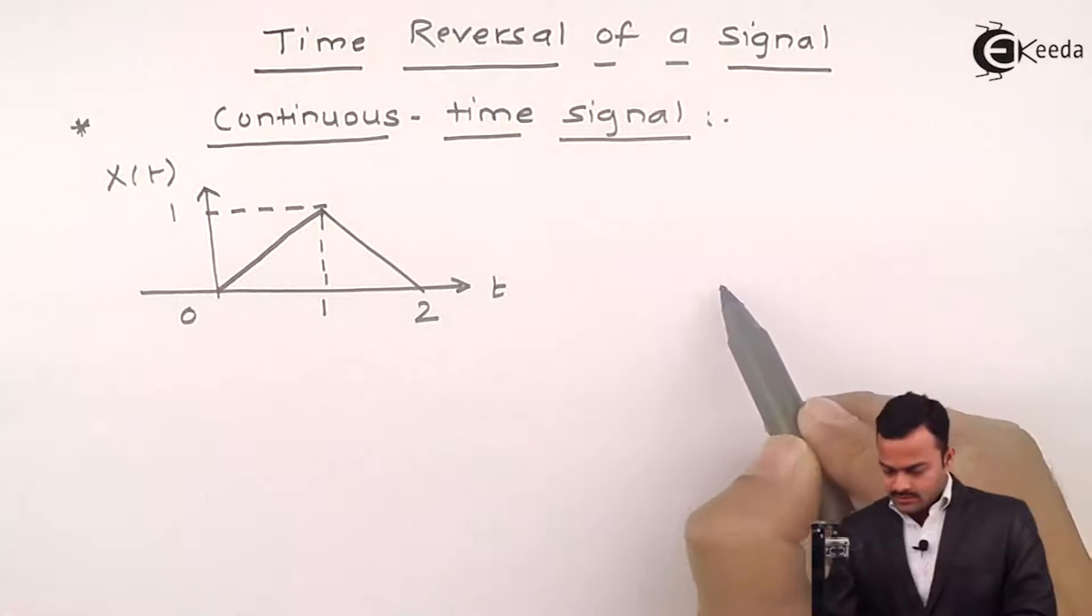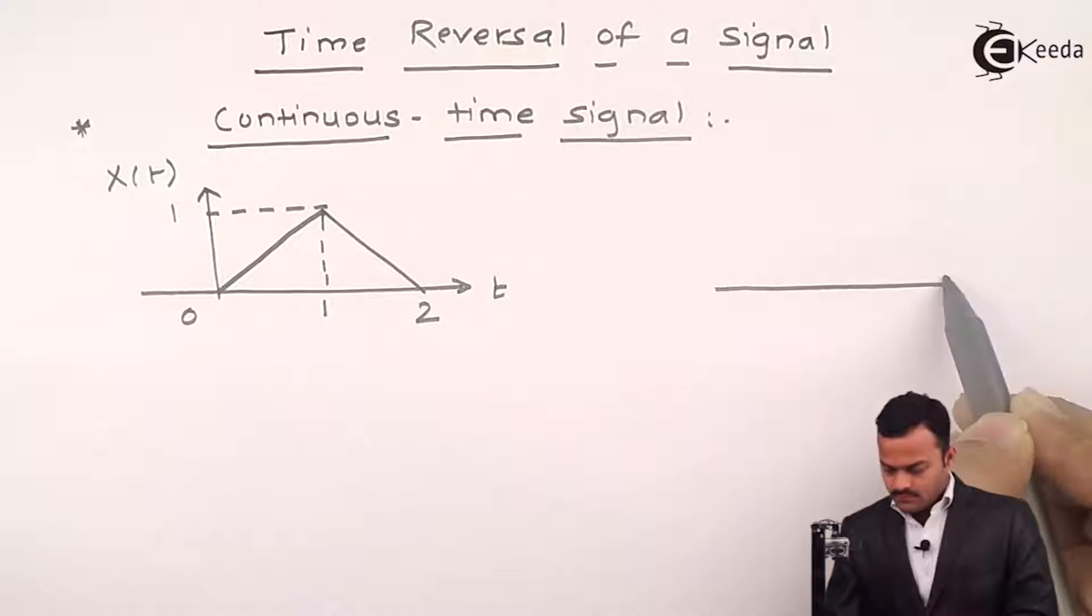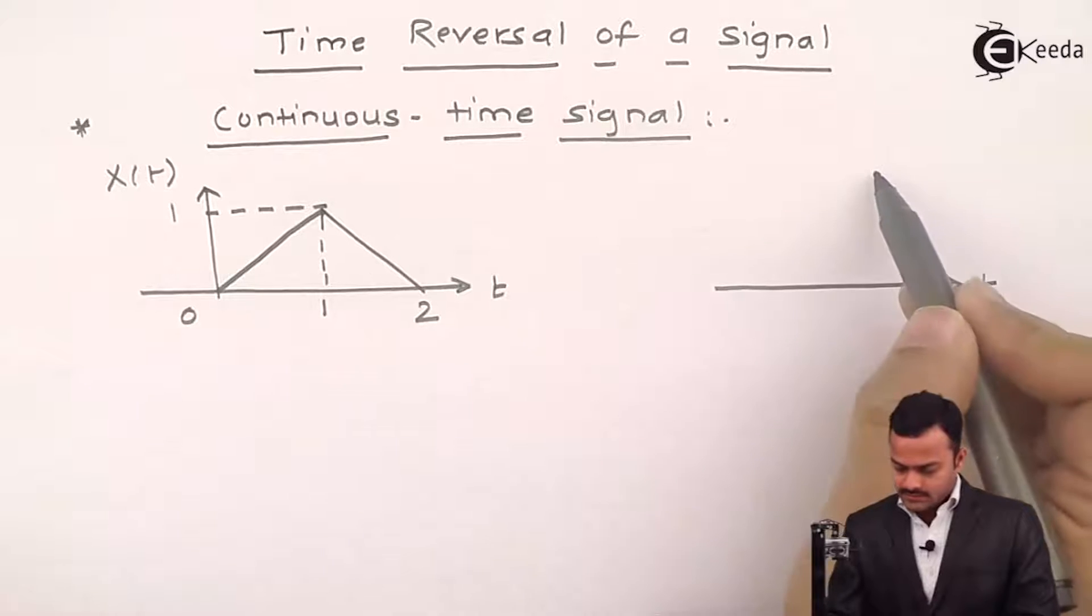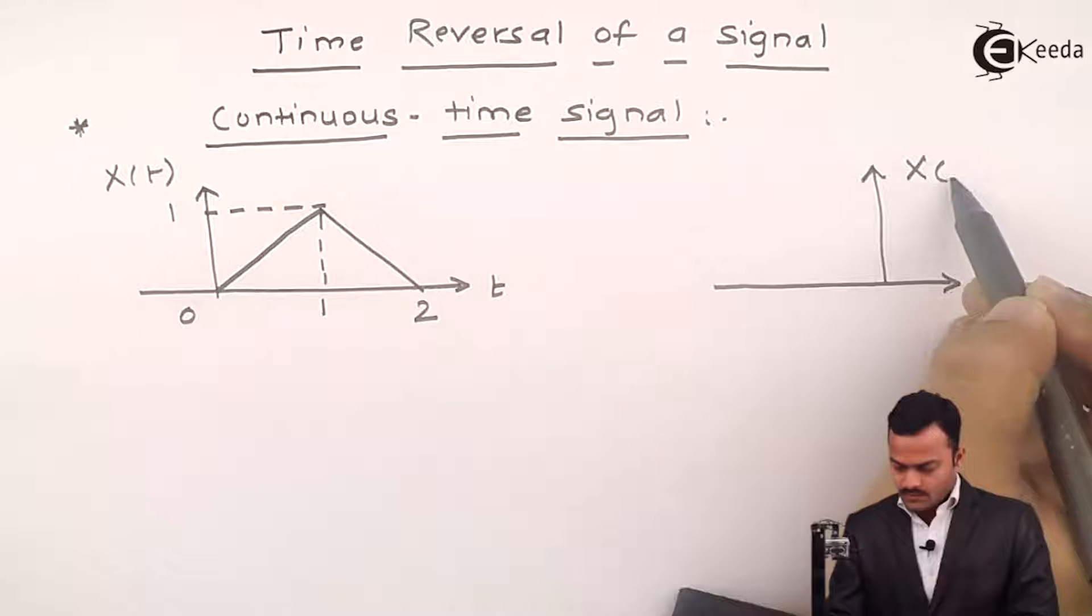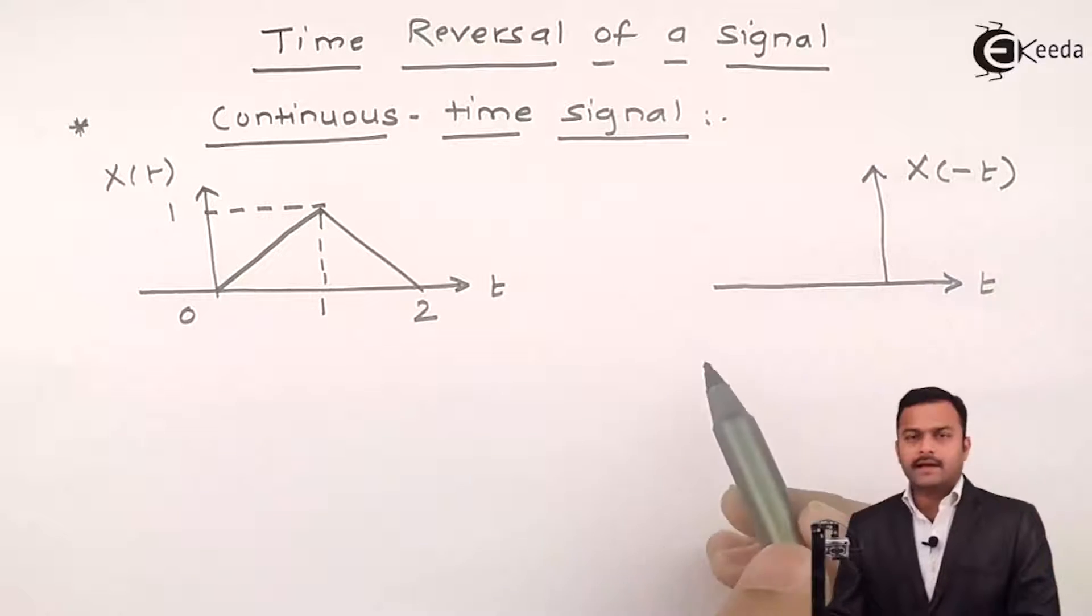So that, we will get a signal like this, which we call as x of minus t.